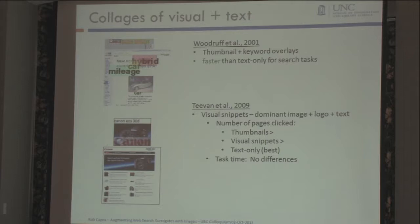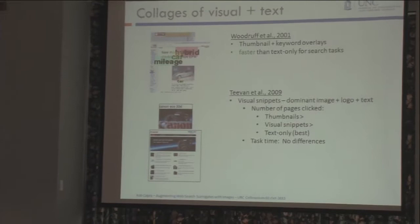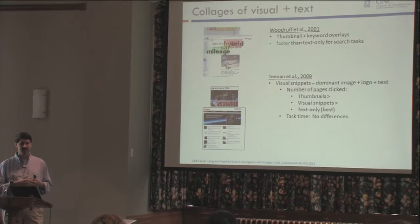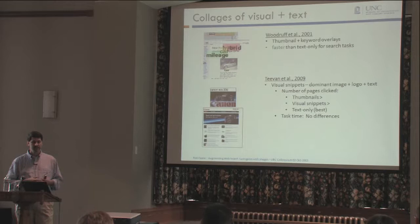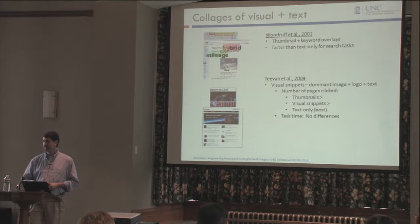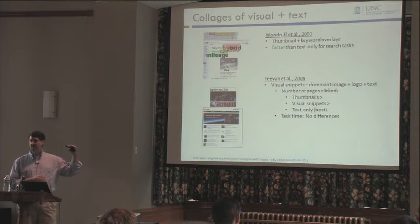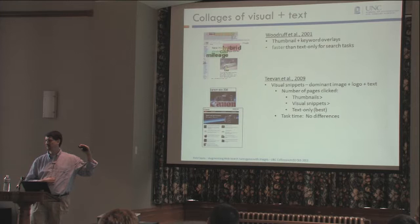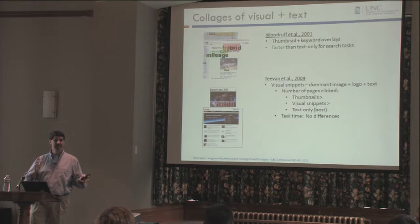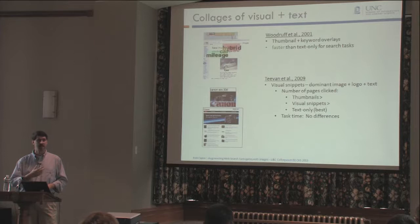As for collages of visual and textual elements, people take a visual element from the page and overlay text on top of it. Woodruff found that enhanced thumbnails were faster in search tasks than text only. Teevan and folks at Microsoft looked at what they called visual snippets — a dominant image combined with textual components. They found thumbnails by themselves had the most clicks, which in search is actually bad, meaning more effort. The visual snippets were in the middle, and text only turned out to be best. We were getting a mixed message about how good these things are.